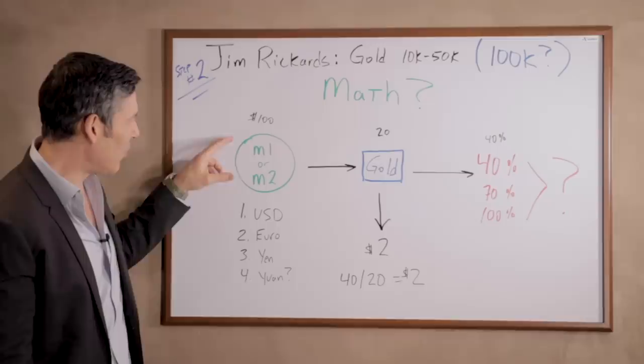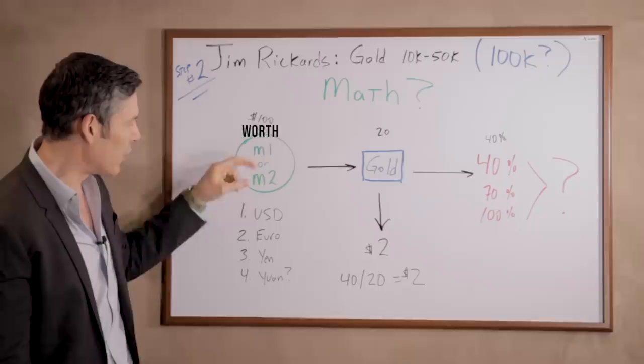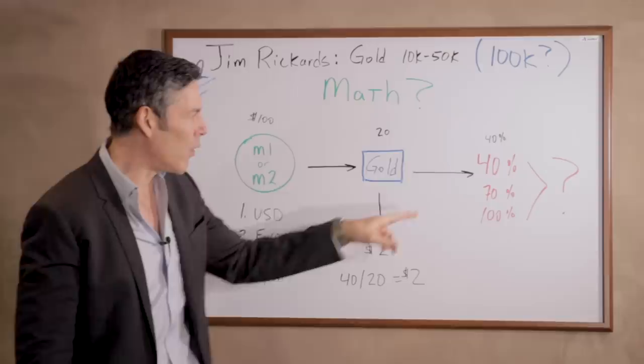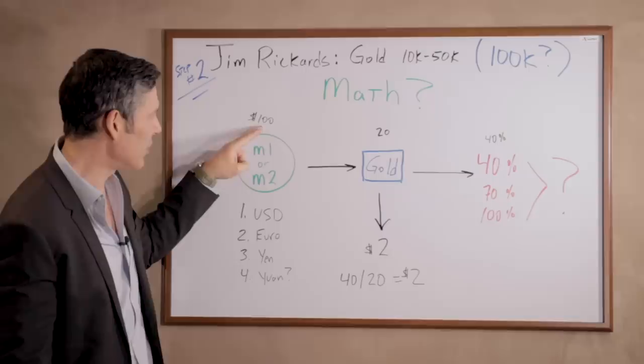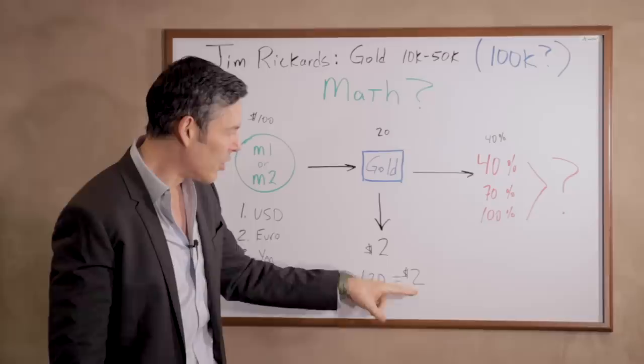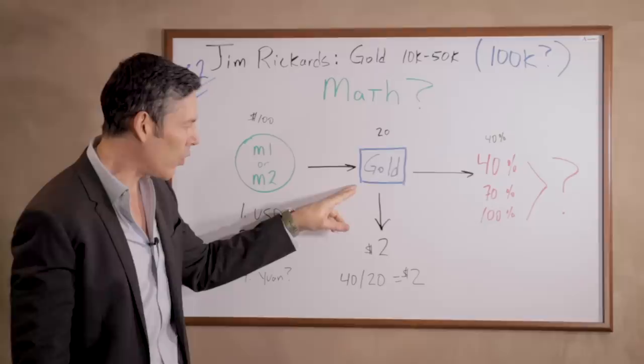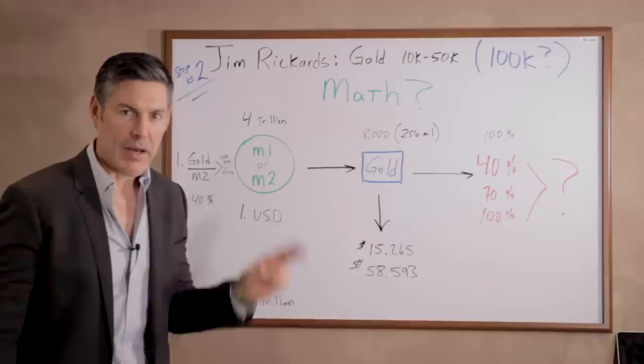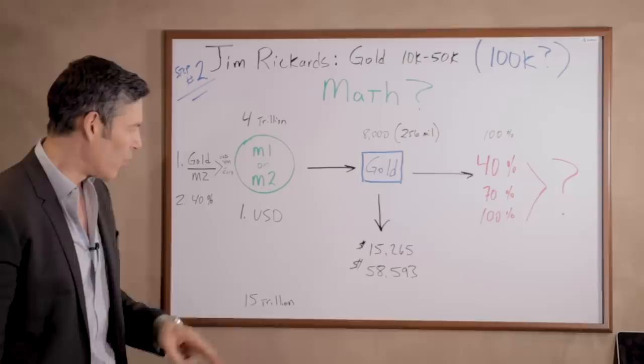Let's assume in this example that there are $100 worth of M1 or M2, and there's only 20 ounces of gold, and we want a 40% gold standard. First thing we do is take 40% of 100, that gives us 40. We take the number of ounces, that's 20, and we divide 40 by 20, which gives us 2. So in order to have a 40% gold standard in this very simple example, gold would have to be priced at $2 an ounce.